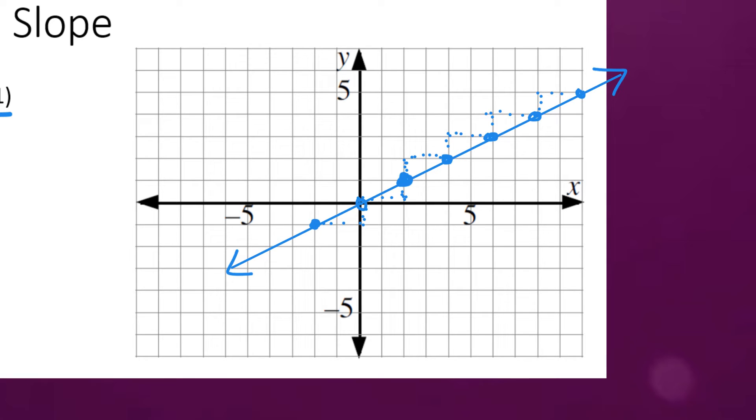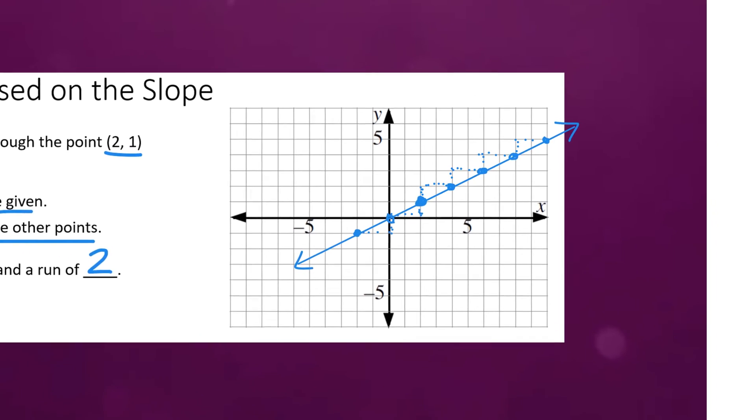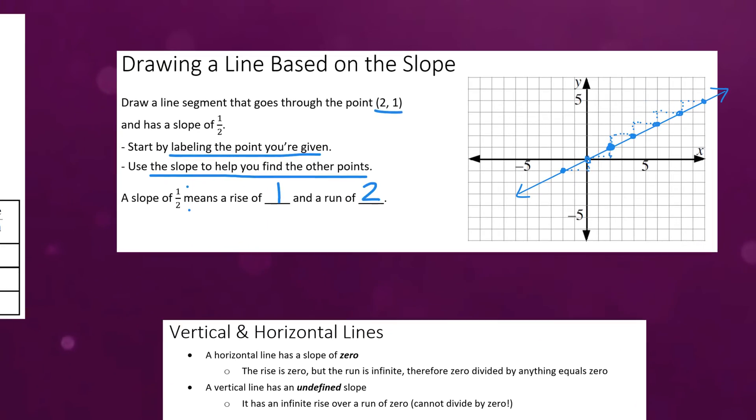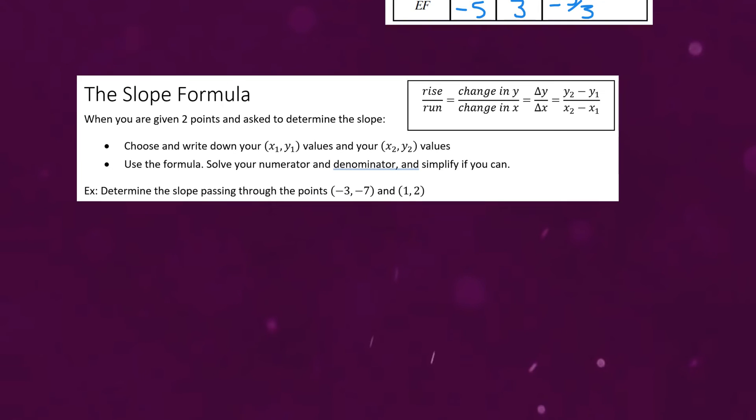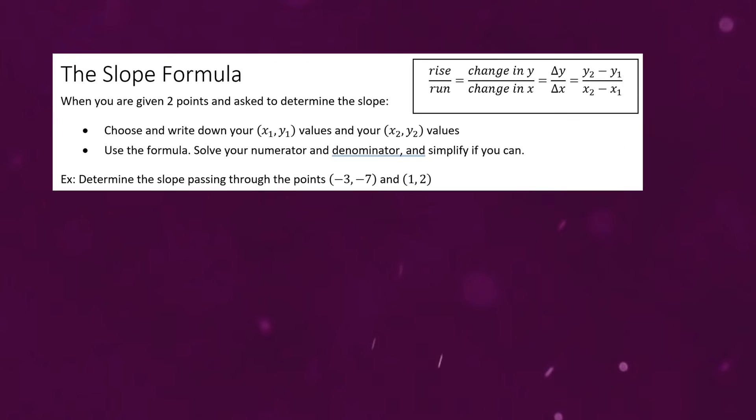Okay so those are some types of problems where we're visually looking at the slope of a line. Now what if we don't have that advantage? What if we're given a question like this where it's asking us to find the slope of a line that passes through the points (-3, -7) and (1, 2)? This time we can't visually look at the graph. So in this case what we do is we utilize something called the slope formula.